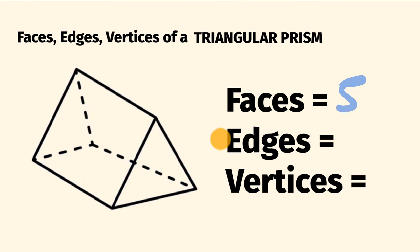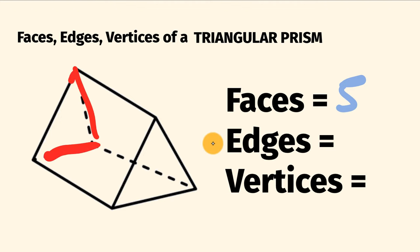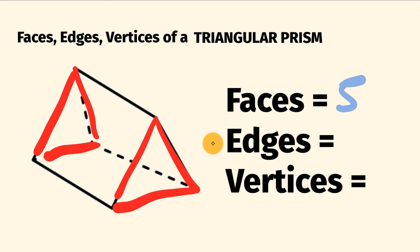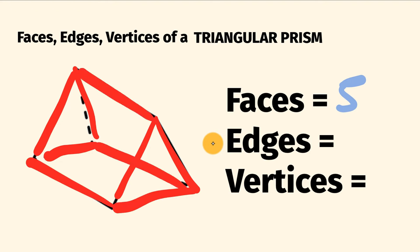Now looking at the number of edges — these are where the shape's faces meet. For each triangle we have three edges: one there, one there, one there, one here, one here and one here. And joining these two triangles, we have three other edges. So all together, we have nine edges in a triangular prism.